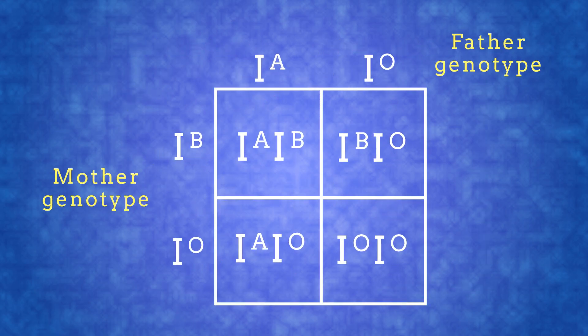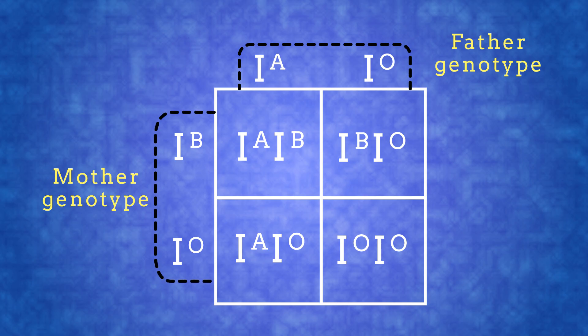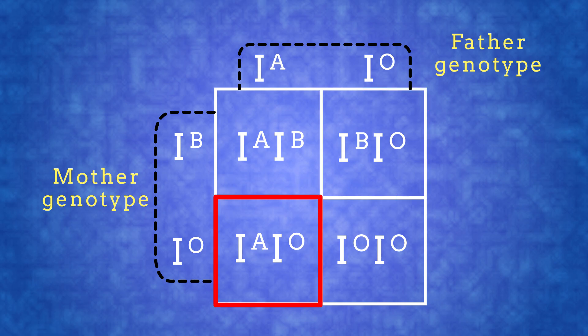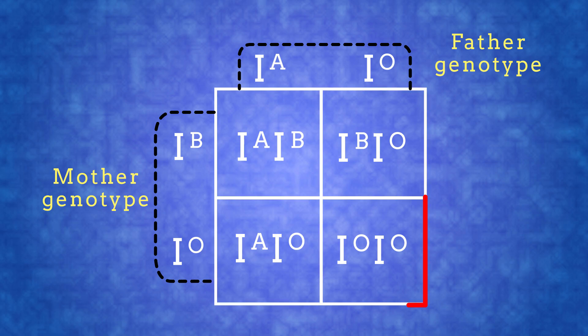If we look at this in a Punnett square — let's say the father has IA IO and the mother has IB IO genotypes — then the offspring could be any of these genotypes: blood group AB, blood group B, blood group A, or blood group O, where the offspring has inherited the O allele from each parent.